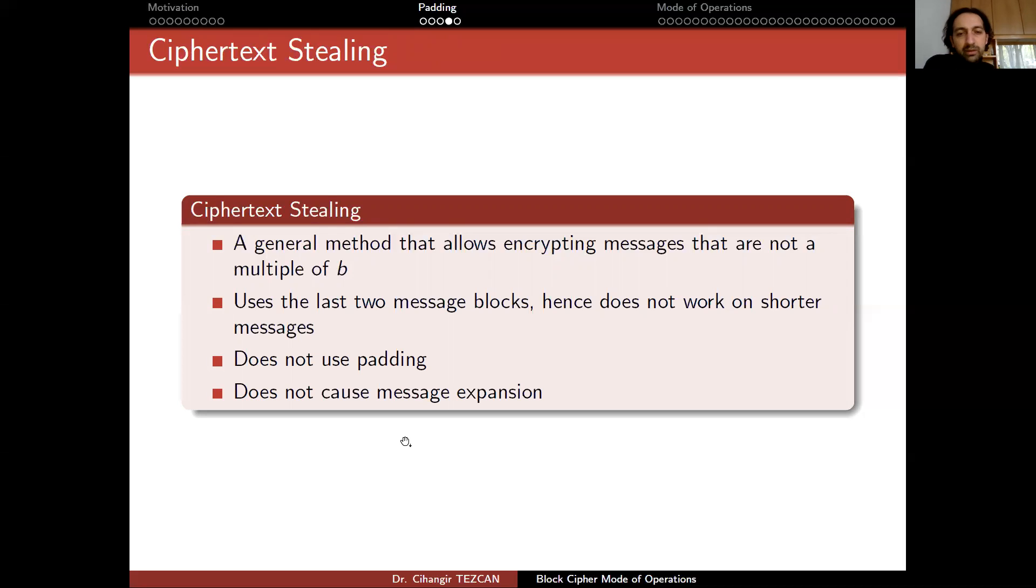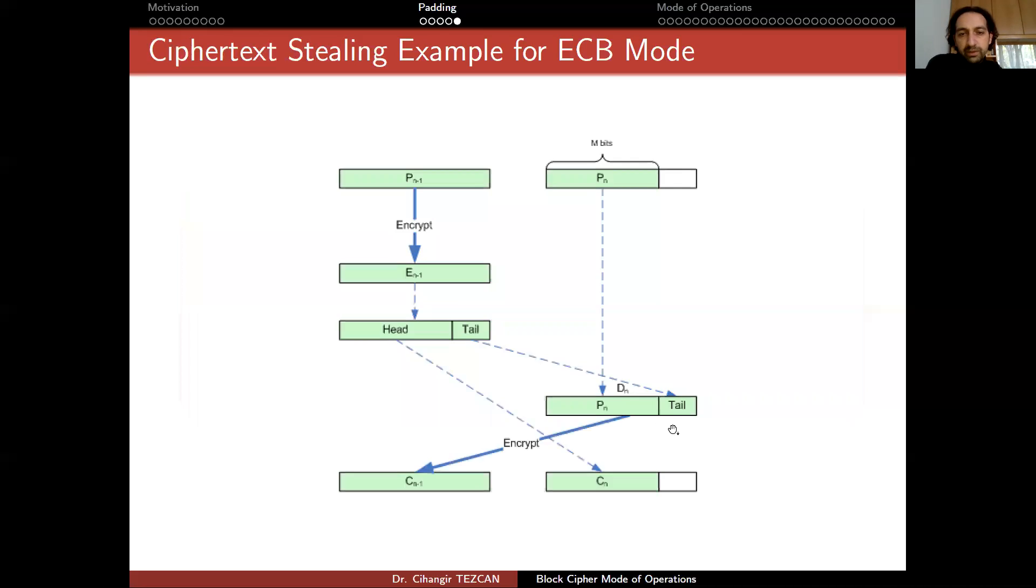But think about it as a full disk encryption. If when you're encrypting a file or something, if it causes a message expansion, then at the end you may end up with files which are actually larger than your hard disk size. So in full disk encryption or file encryption, you wouldn't prefer a message expansion. So this is why ciphertext stealing methods most of the time are used in full disk encryption techniques.